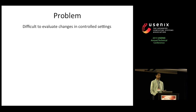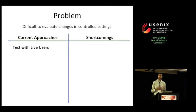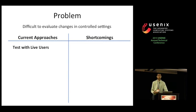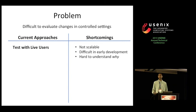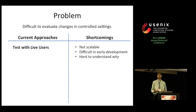Developers today primarily use one of two approaches. The first is to directly test on live users. While it's useful to evaluate a change in the environment where it'll ultimately be deployed, this approach has several shortcomings. First, there have been too many changes proposed to actually test all of them on live users, and in fact many developers don't have access to live users. Additionally, in the early stages of development, an application or protocol may not perform well enough to be tested on live users.